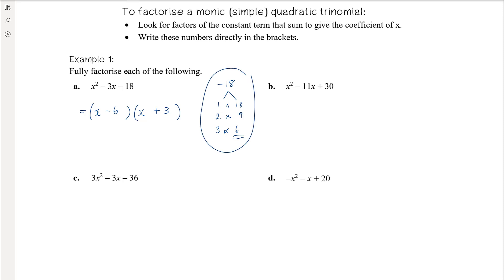If the number is quite large, be systematic about how you find its factors. There's no magic skill set — those who know their times tables will find it easier. If you don't, just work through it: does 1 go into it? Does 2? Does 3? Be systematic so you don't miss any factor pairs.